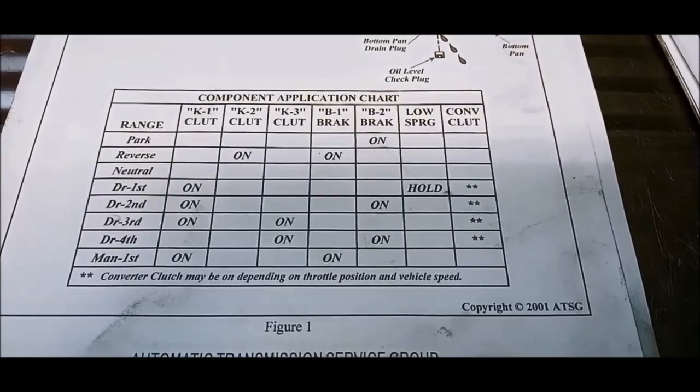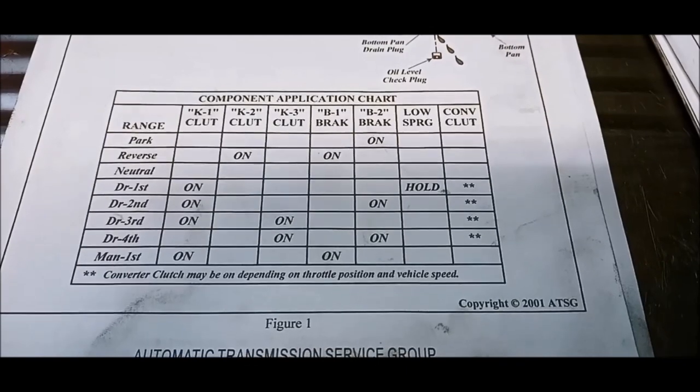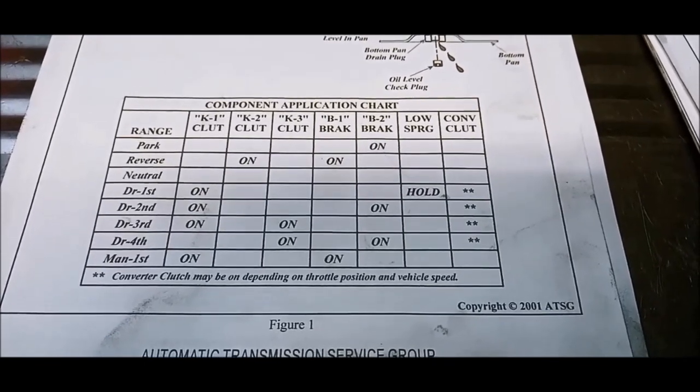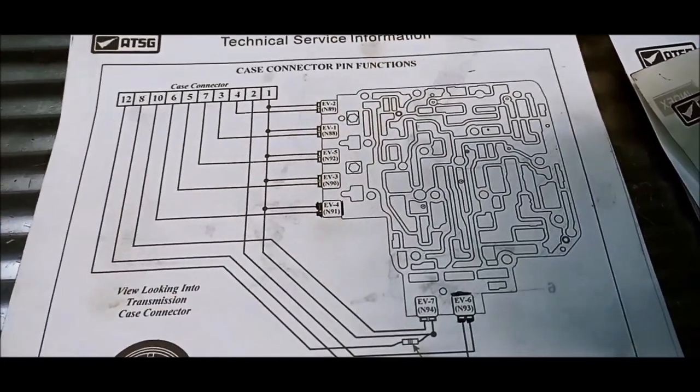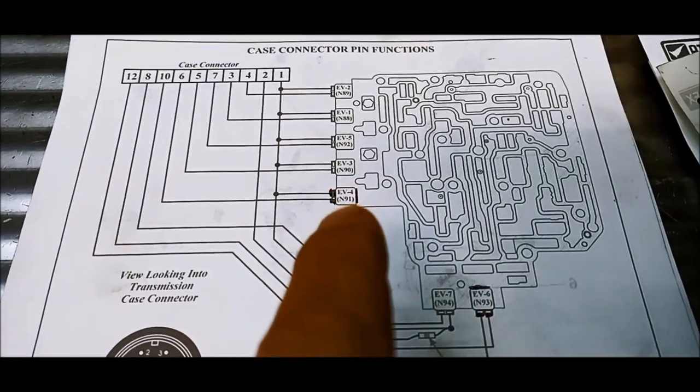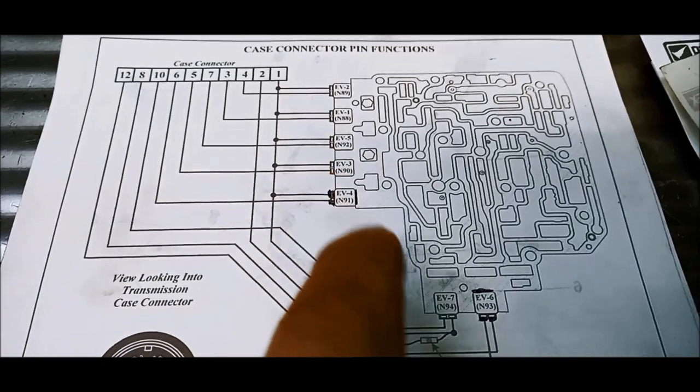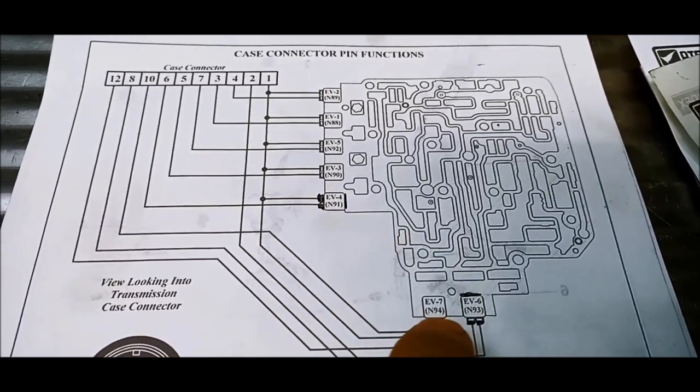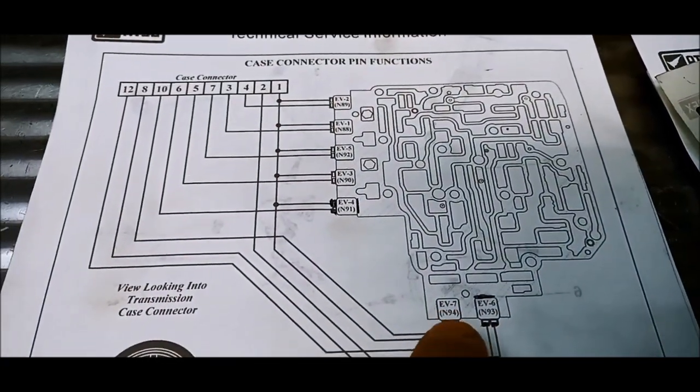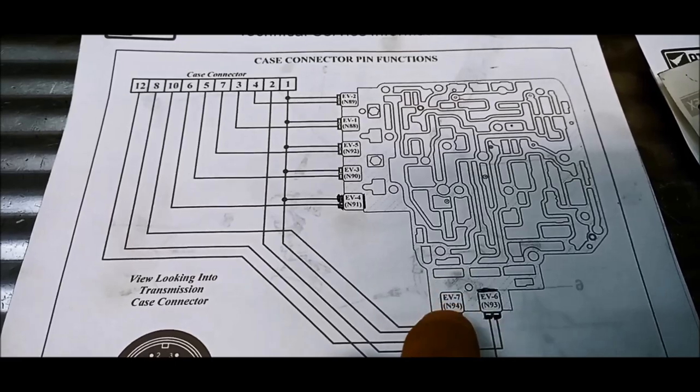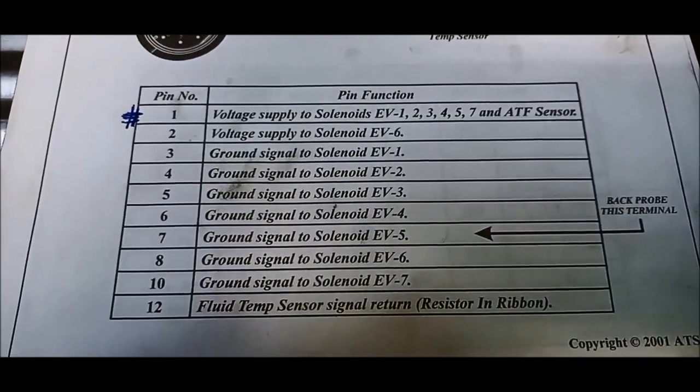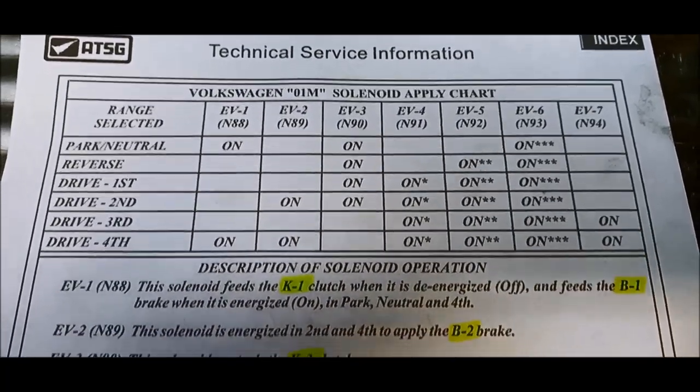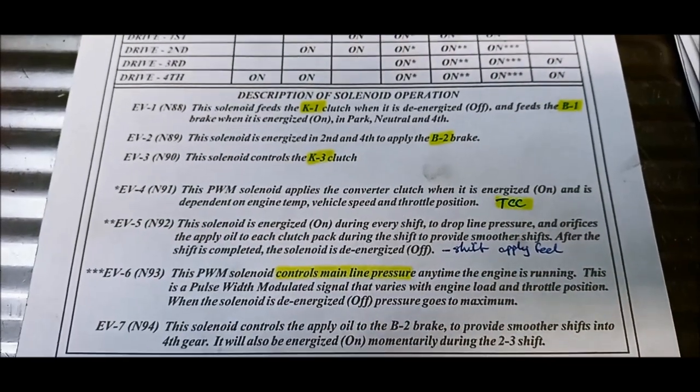We're on the ATSG manual, the application chart. What clutches are applied in what gears. Low sprag, that's basically a one-way clutch. And then you've got the torque converter clutch, which is inside the torque converter. Now still on the ATSG manual, and this shows the location and the reference of which solenoid is what on the valve body. You'll just note this one and this one, they're both the same. They're the same solenoids. And then you've got five solenoids that are the same as well. You can't mix them up. The actual body of the solenoid is a different size in those. And here we have just the location of the pins and which pins do what. Solenoid application chart there. And also a description of what all the different solenoids do.